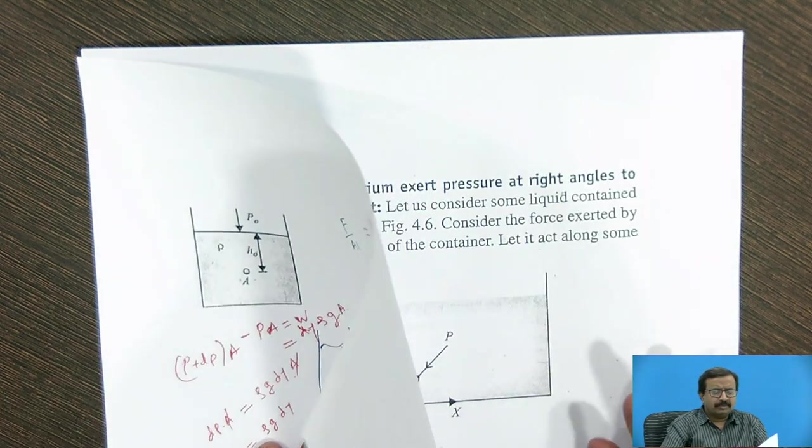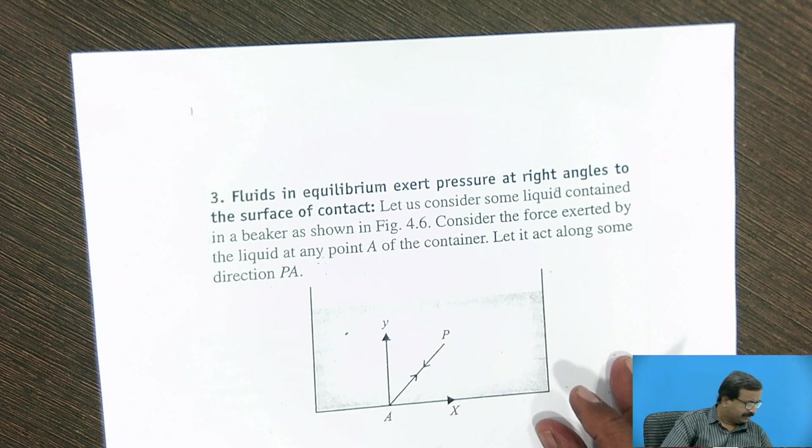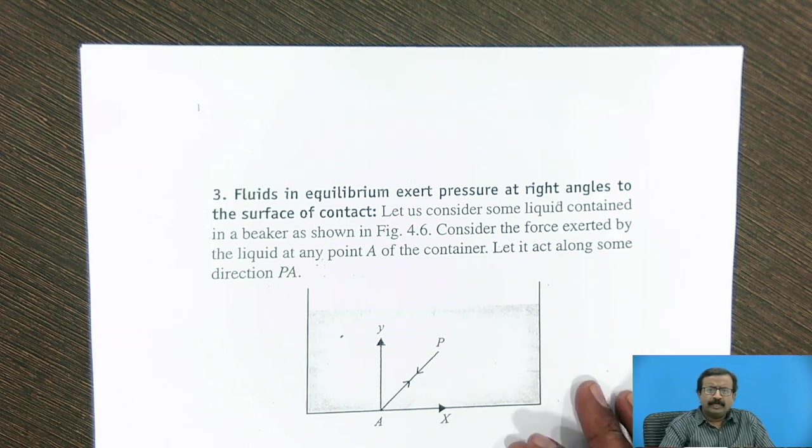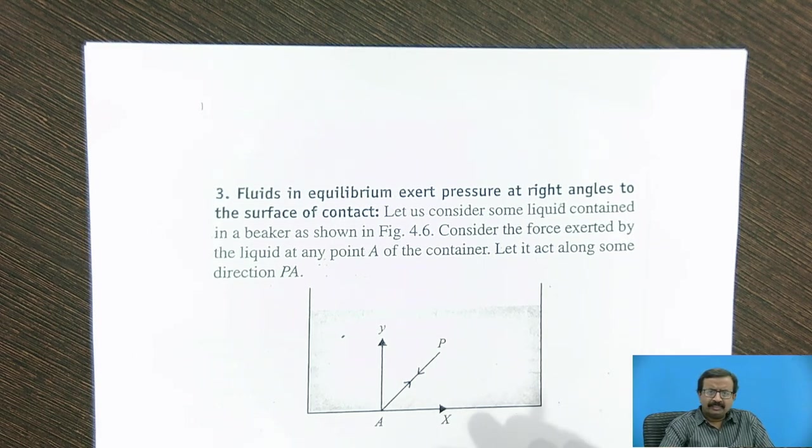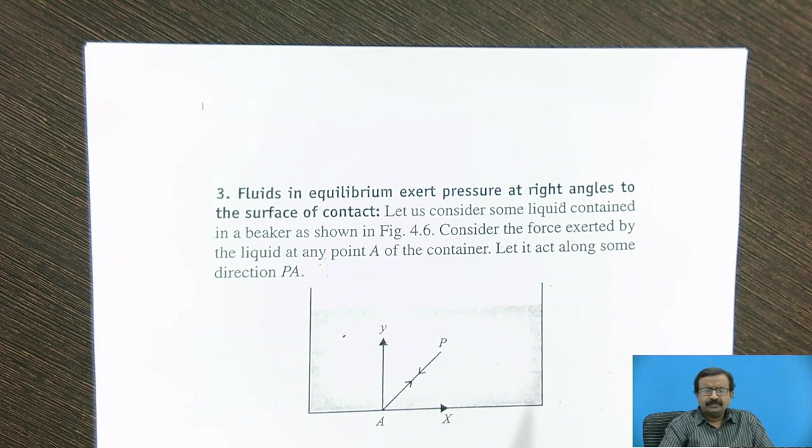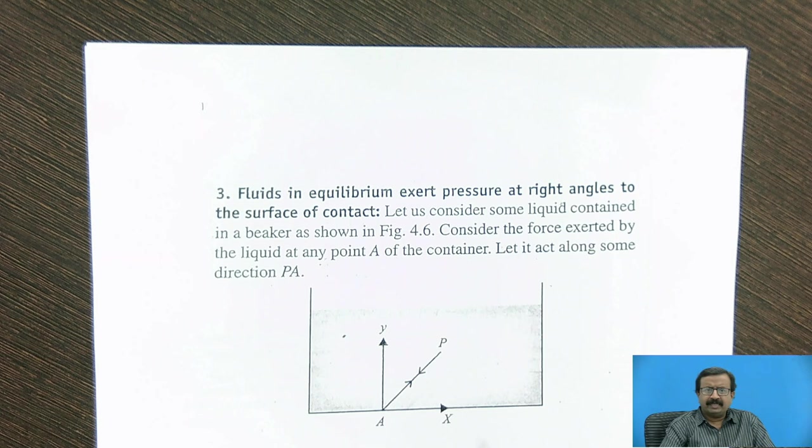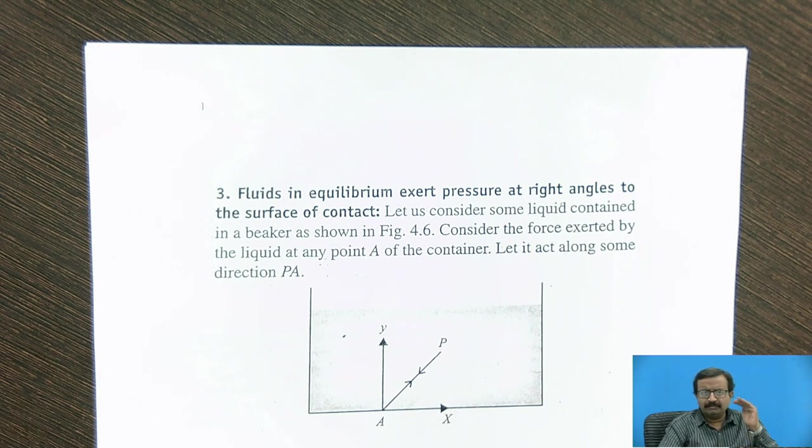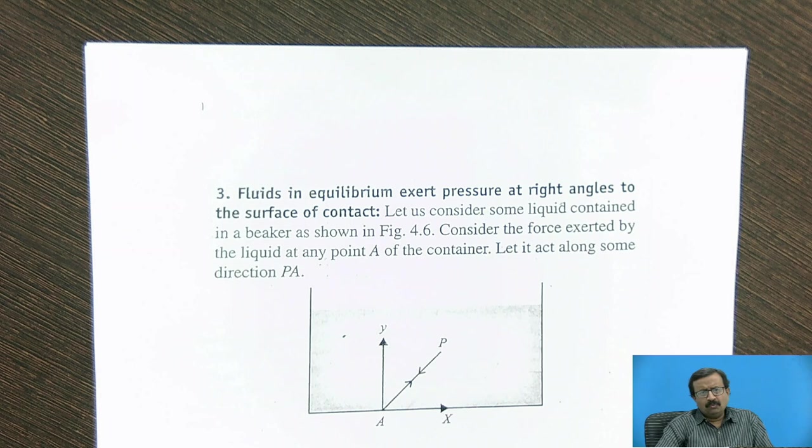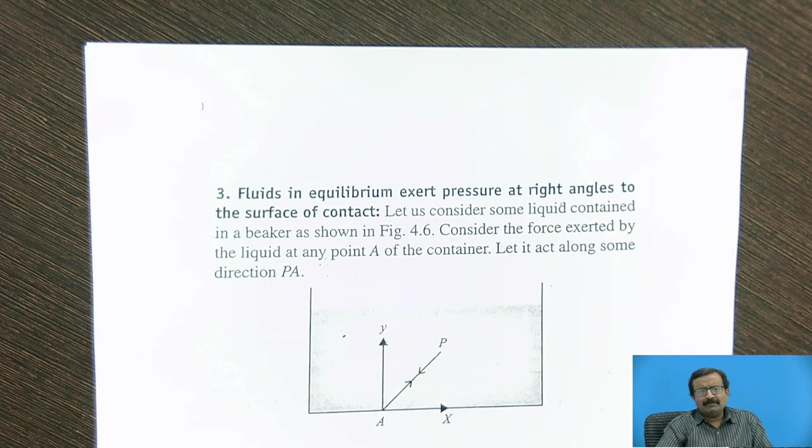Now one important thing about this pressure, that is the static pressure that we have, is evident from another property of fluid, which you must know at this particular moment, so that I am taking this property here. Now see what is written here. Fluids in equilibrium exert pressure at right angles to the surface of contact. Now actually you have answered this question. When a balloon was there, it was filled with water. When the piston is pressed, water oozes out and it comes necessarily in the radial direction, it indicates that it is in the normal direction. Now we will prove this with the help of a mechanics.